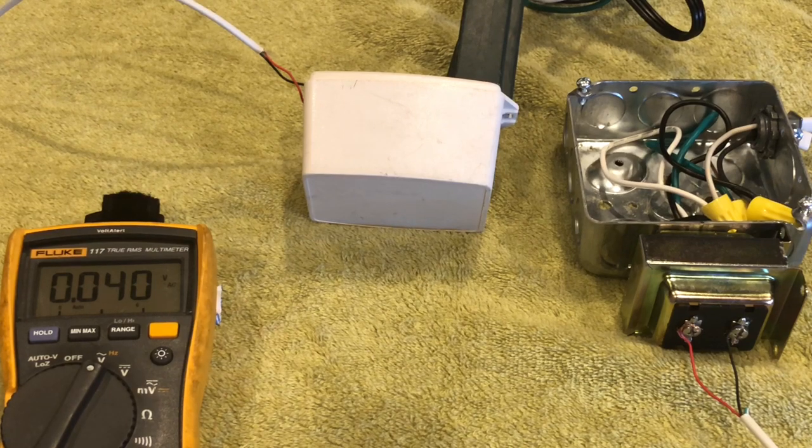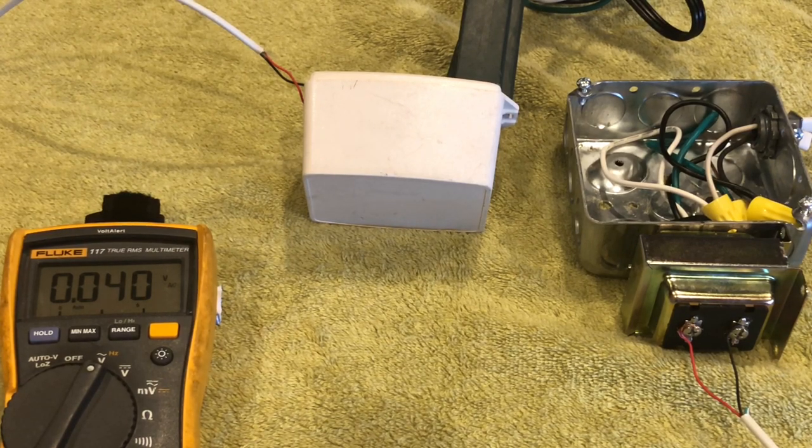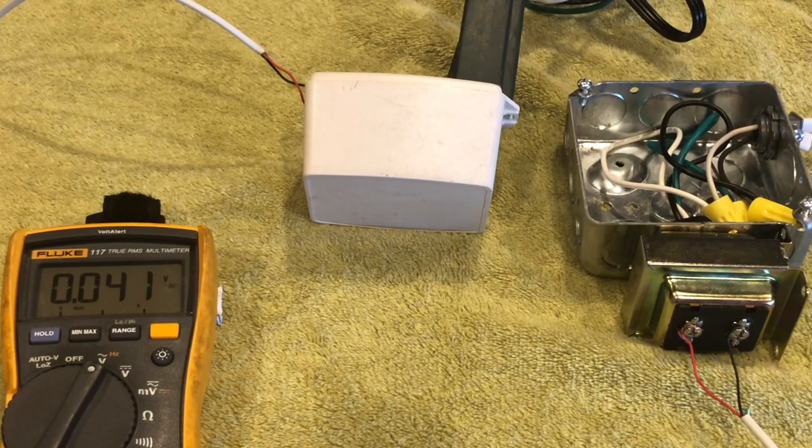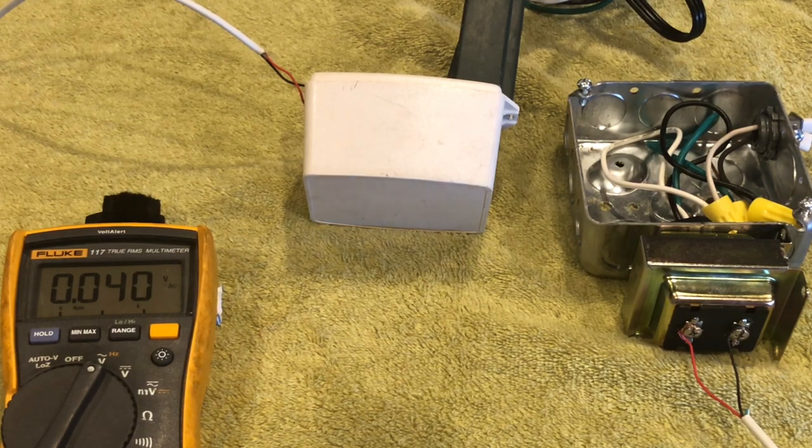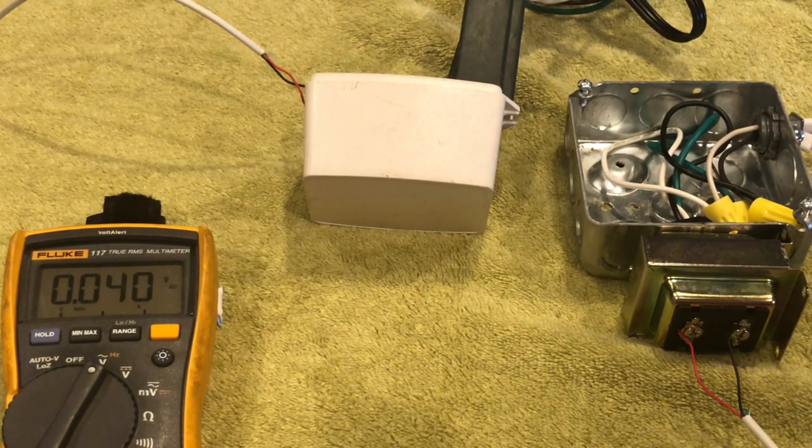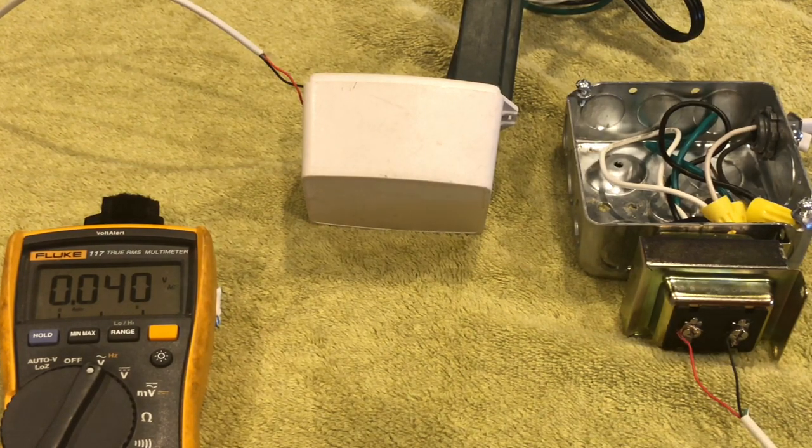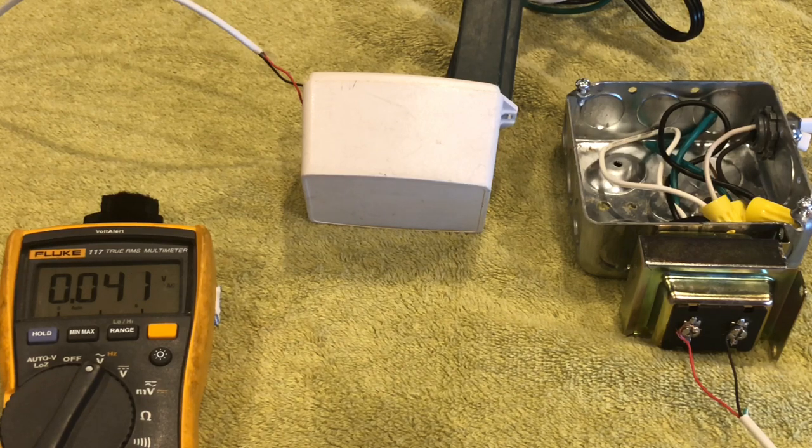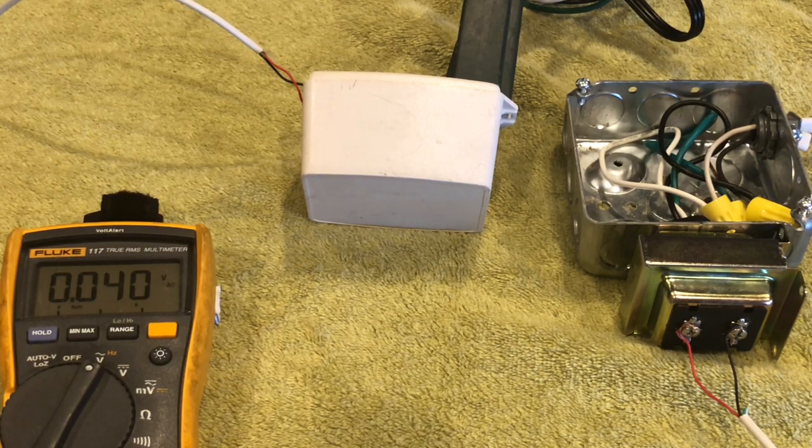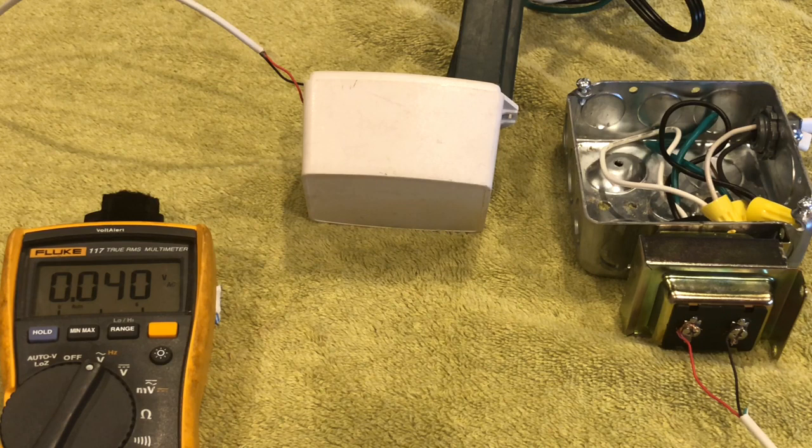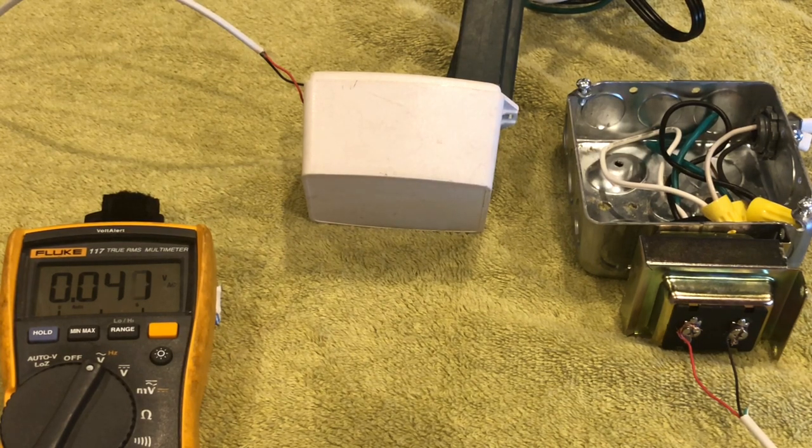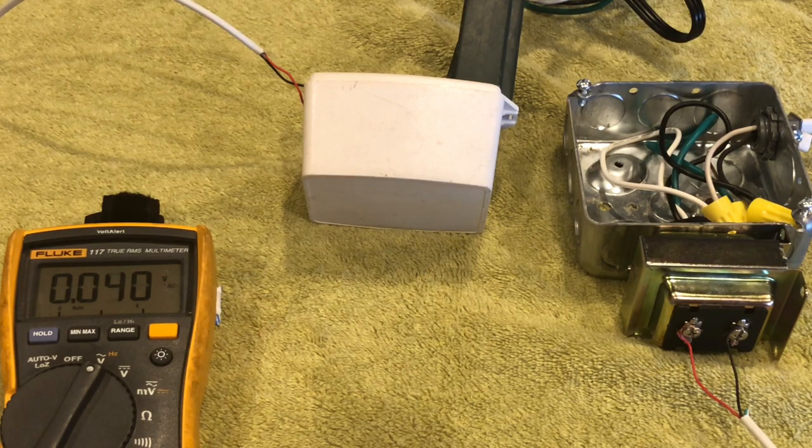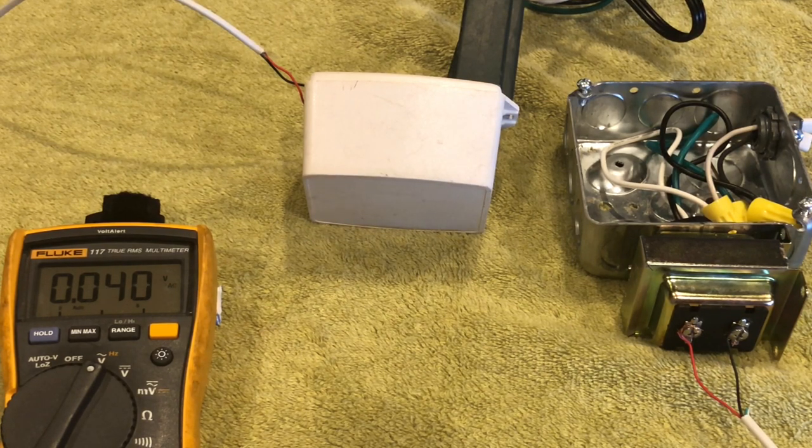Now transformers come in all different sizes too. If you have an older home, it's possible that you have an 8 volt or a 12 volt transformer, and neither of those are going to be suitable for running either doorbell, either the Nest Hello or the Ring Video Doorbell Pro.